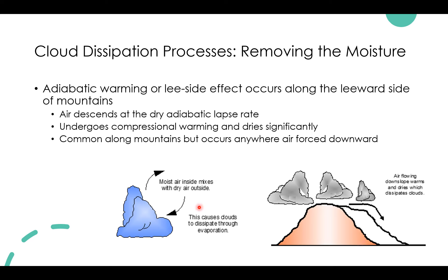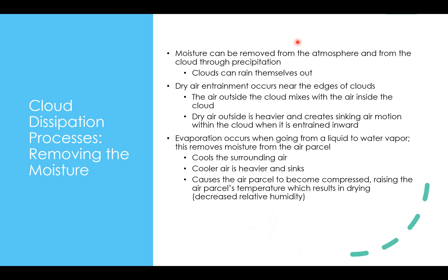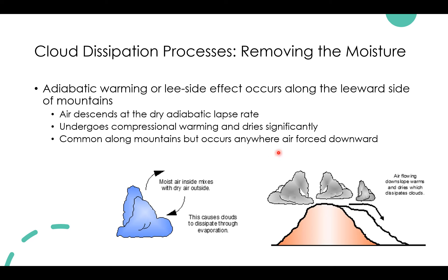Here are our two main dissipation processes summarized. Dry air entrainment: drier air mixes in from the outer edge of the cloud and gets inside; that heavier, drier air results in sinking air motion, causing the cloud to dissipate. And air flowing downslope of a mountain results in compressional adiabatic warming, dissipating the cloud on the leeward side.